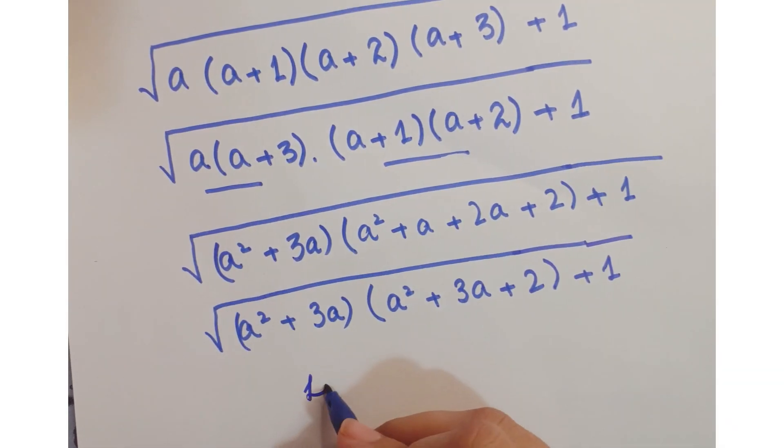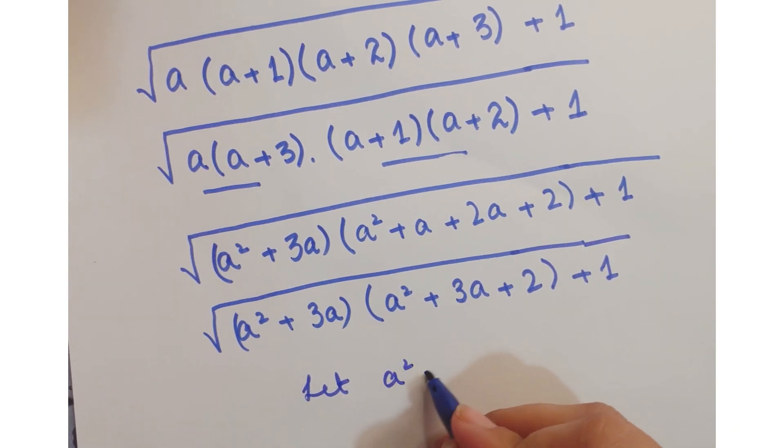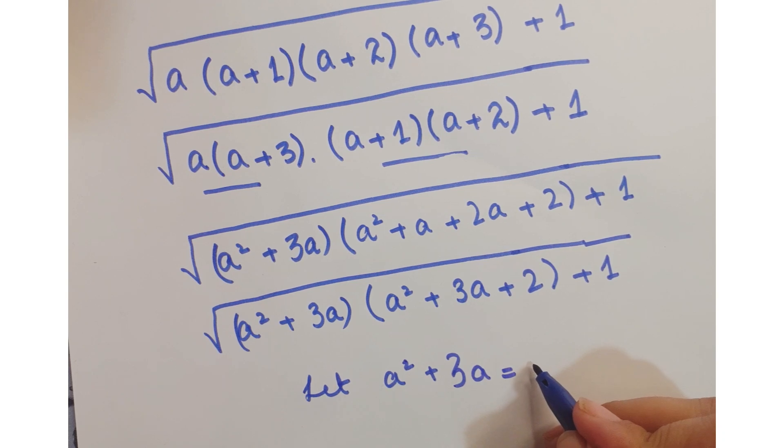Further, you can write it as (a squared plus 3a) into (a squared plus 3a plus 2) plus 1.